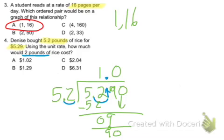Bring down a 0. So 52 goes into 90 once. And that would be 52. You subtract, and you get 38.